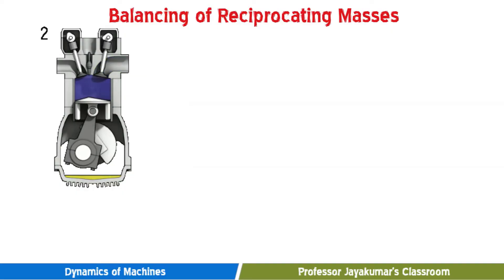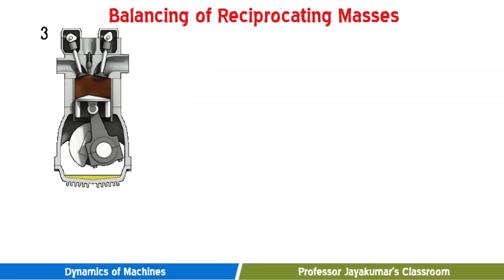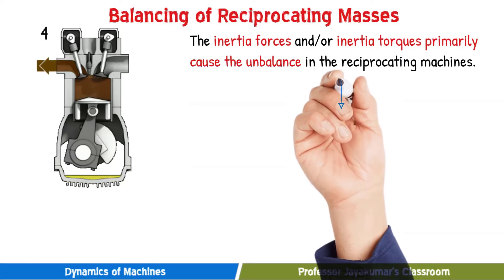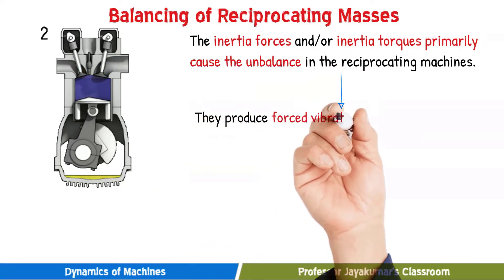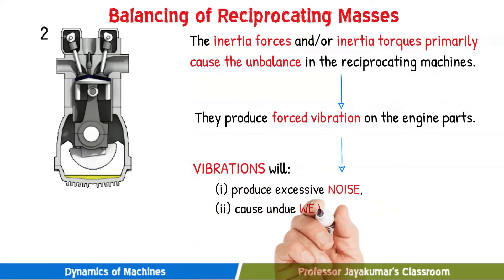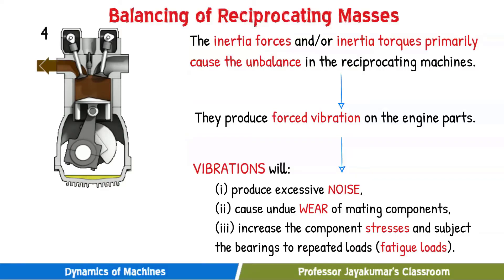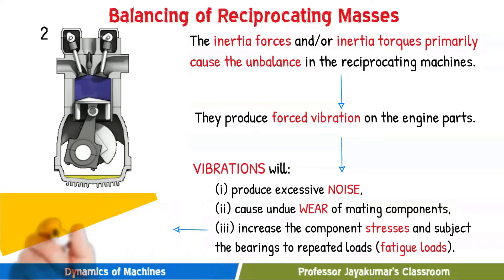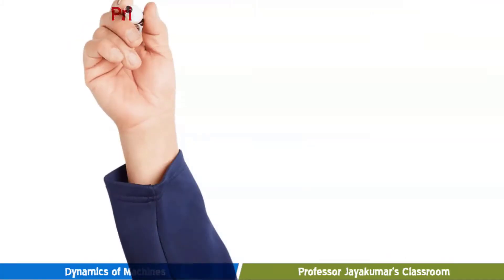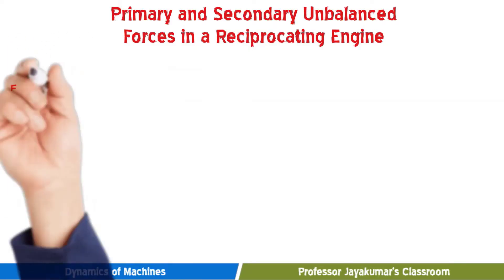In a reciprocating engine we have reciprocating parts such as the piston, piston rings, and gudgeon pin. Whenever we have accelerating parts, we will have associated inertia forces. These inertia forces cause unbalance in reciprocating machines; they produce forced vibration on engine parts. The vibrations produce excessive noise, cause undue wear of mating components, increase component stresses, and subject the bearings to repeated fatigue loads. Therefore, like rotating masses, reciprocating masses must also be balanced.